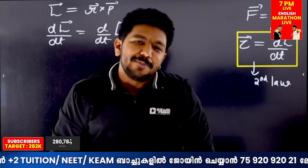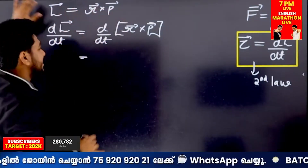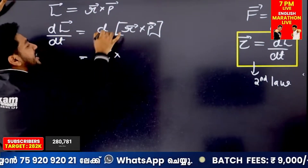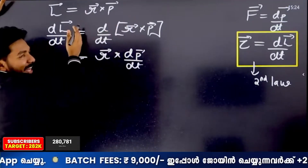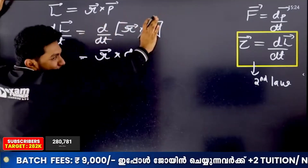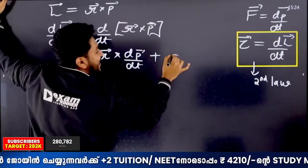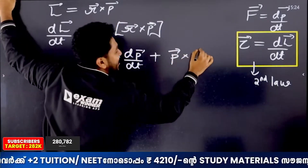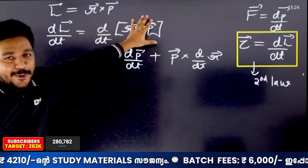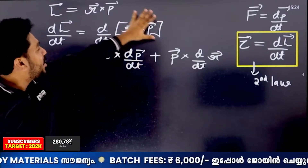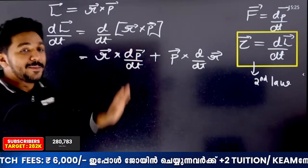The derivative of r cross p — we apply the product rule. It's very simple. There are two terms: d by dt of r, then cross p, plus r cross d by dt of p. Then d by dt of r cross p is expanded using the product rule — this is the final form.